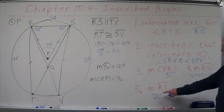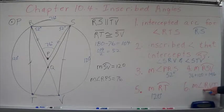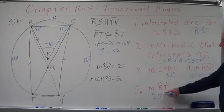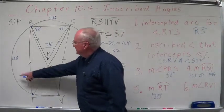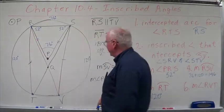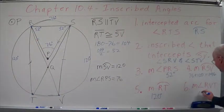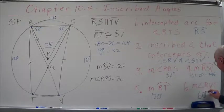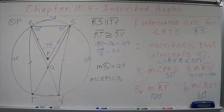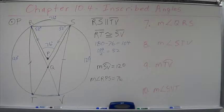angle RVT creates arc RT, which is 120. It's an inscribed angle. So this has to be 60 degrees. We'll do a few more.